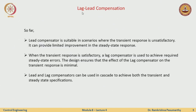So far what we have learnt is that the lead compensator is suitable in scenarios where the transient response is unsatisfactory. This is essentially done by adding a zero which will pull the root locus to the left, and then you add a compensating pole so that you could realize it physically. Once the transient response is satisfactory, or where we have to improve the steady state errors, we use a lag compensator.